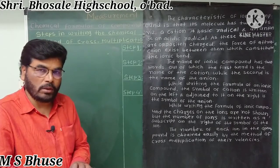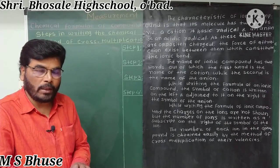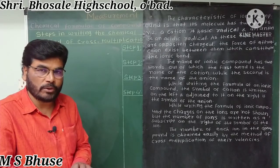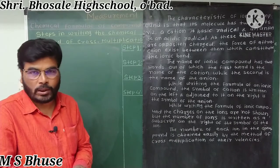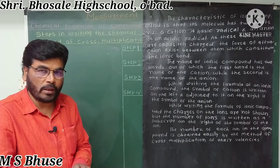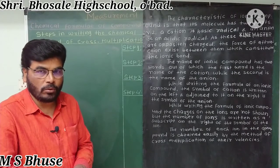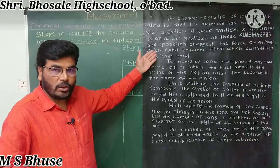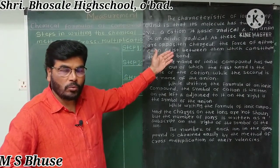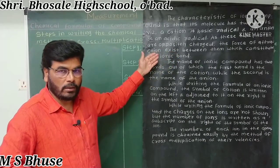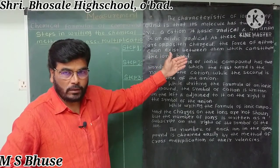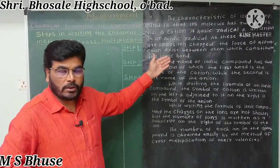While writing the formula of ionic compounds, we need to follow certain rules and steps. The characteristic of an ionic compound is that its molecule has two parts: namely a cation, that is the basic radical, and an anion, that is the acidic radical.